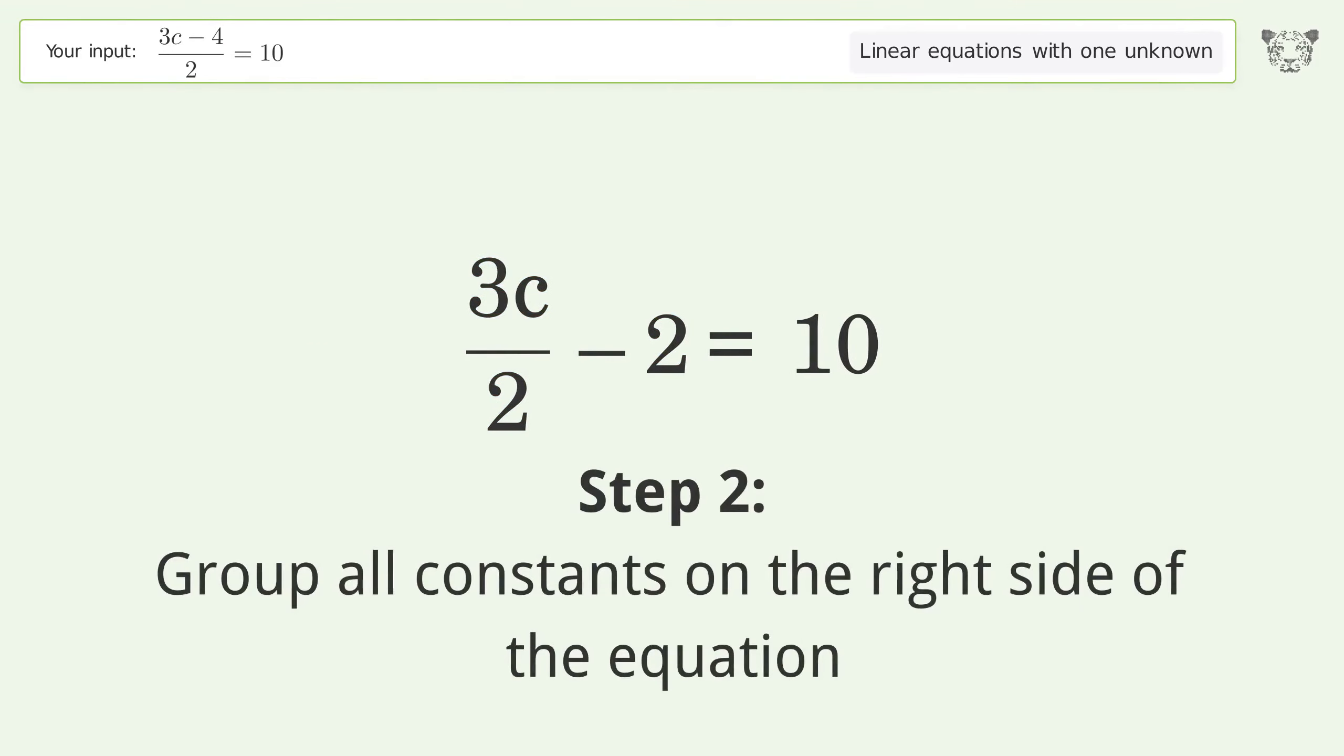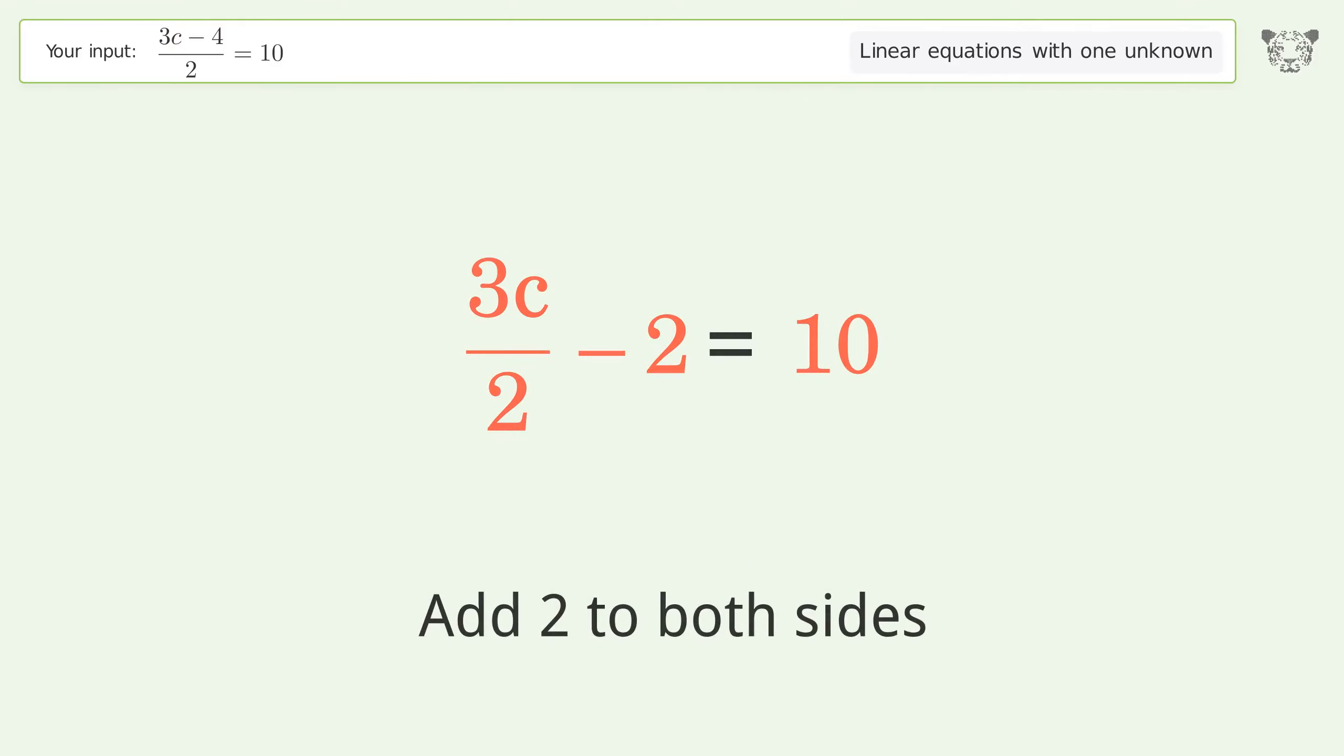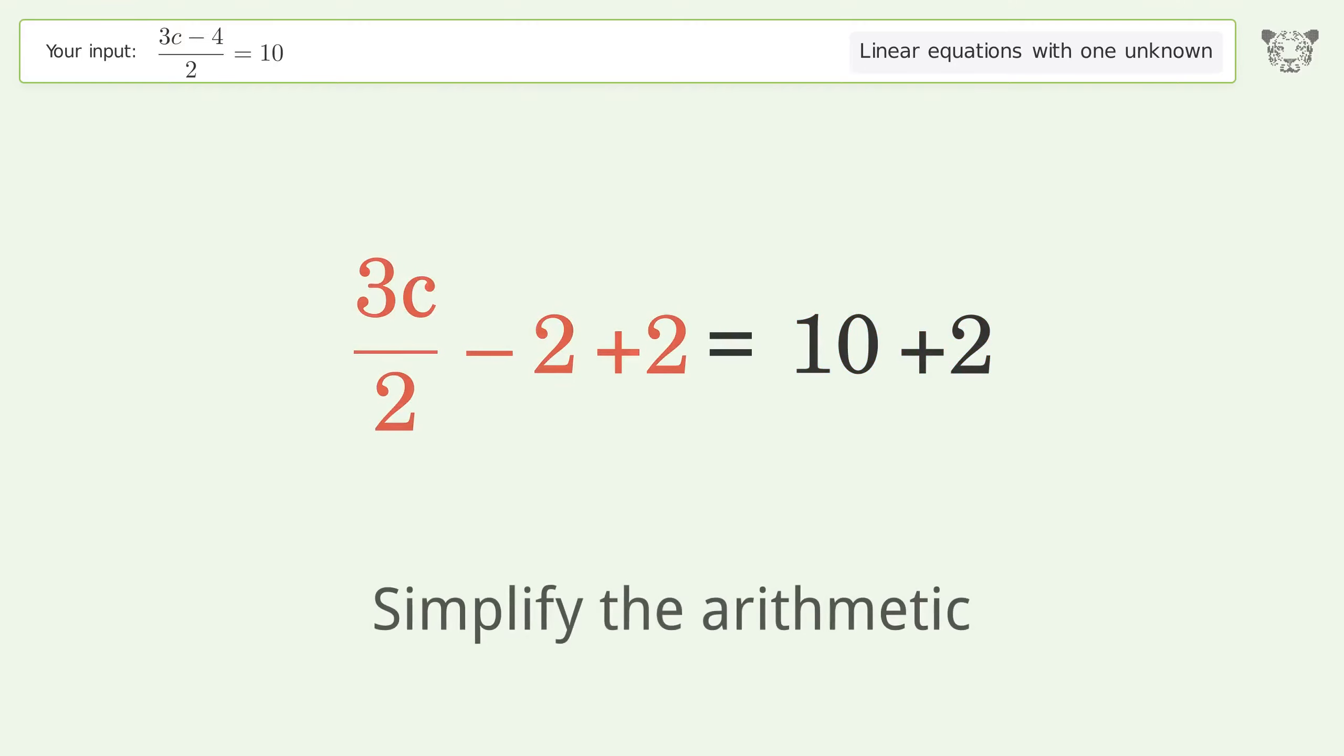Group all constants on the right side of the equation. Add 2 to both sides, then simplify the arithmetic.